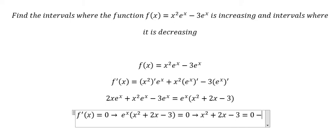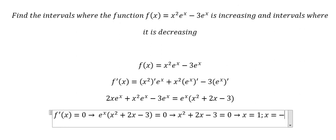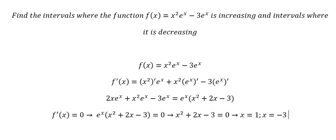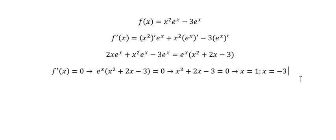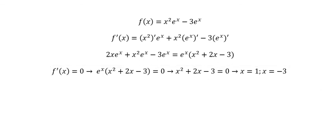We get x equals one and x equals negative three. Now we need to analyze. We know that e to the power of x is always positive, so we only need to analyze the sign of the remaining factor.